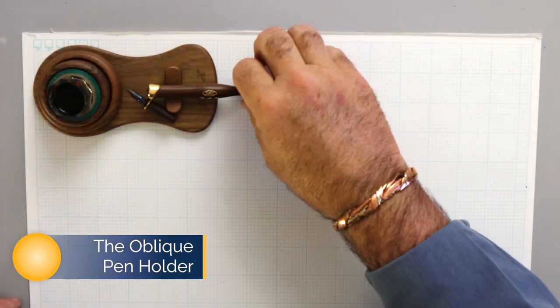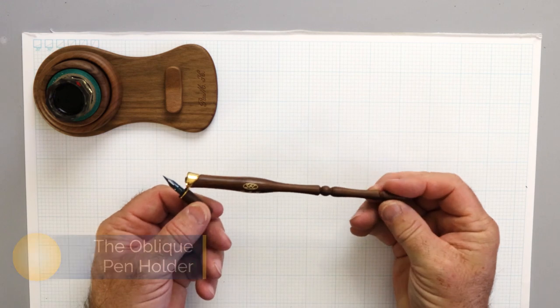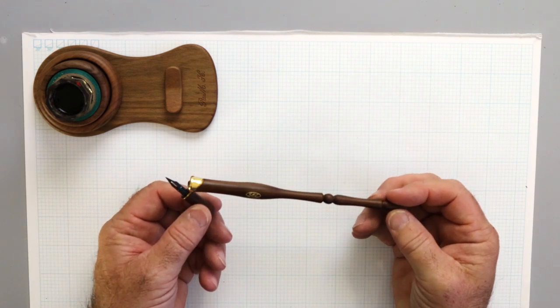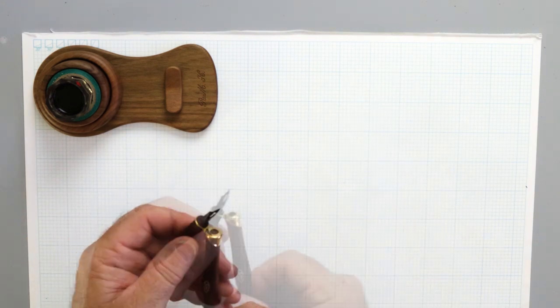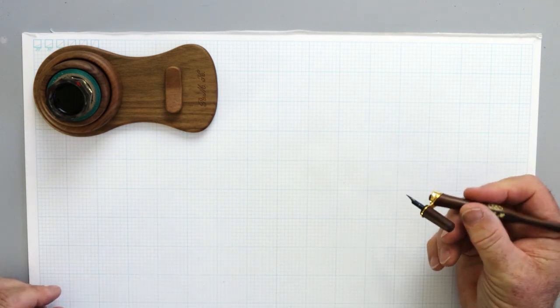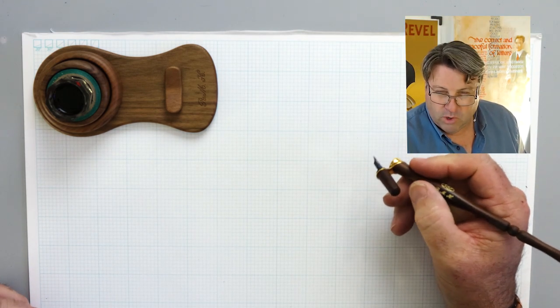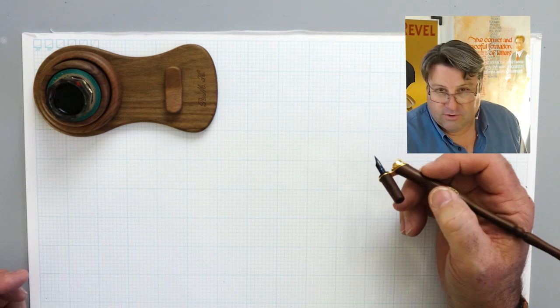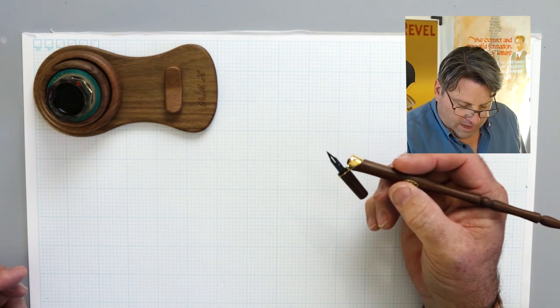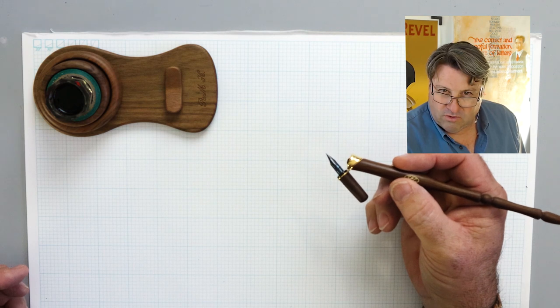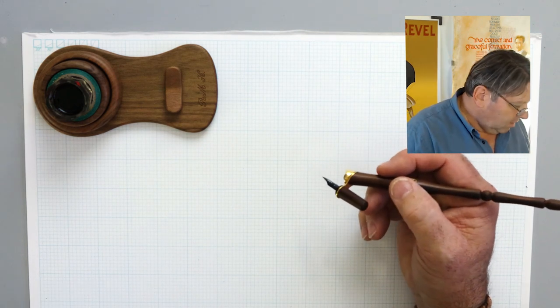Next is the oblique pen holder from SEC Calligraphy. Again, a beautifully tooled pen holder. The pen nib is just at the perfect angle for me. Now, those of you who know me, I'm not known for pointed pen work. I like doing it. Many times I use a straight pen holder. But this is going to make me want to use an oblique pen holder. I will tell you that right now.